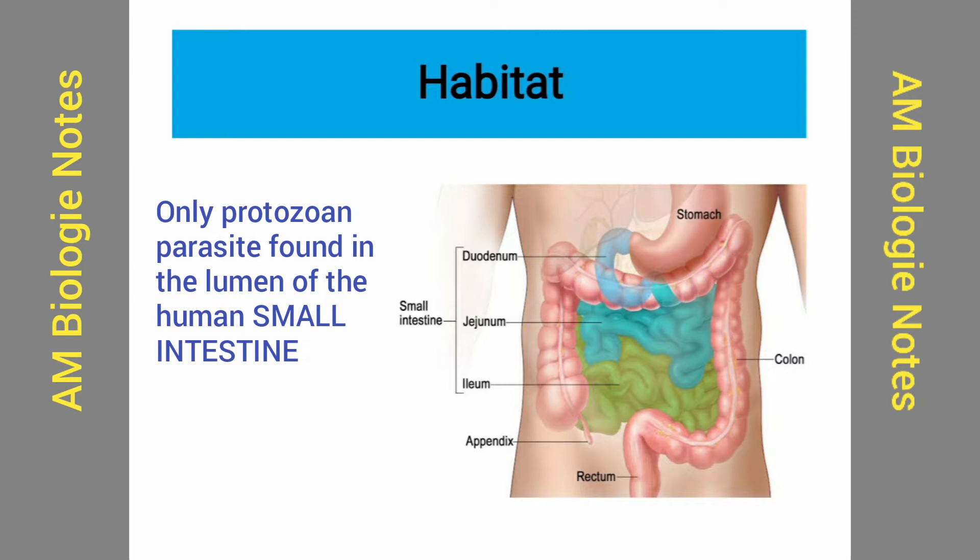Habitat: Giardia intestinalis lives in the duodenum and upper jejunum, and is the only protozoan parasite found in the lumen of the human small intestine.